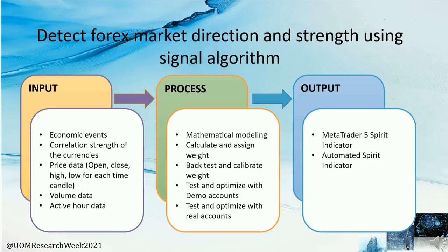The processes include mathematical modeling, calculating and assigning weights, back-testing and calibrating weights, testing and optimizing with demo accounts, and testing and optimizing with real accounts. The two outputs are the MetaTrader SPIRIT indicator and the automated SPIRIT indicator.